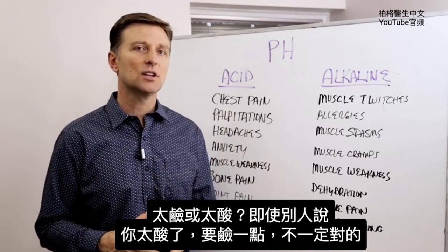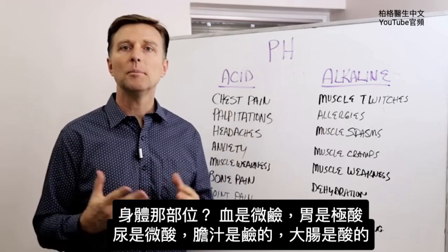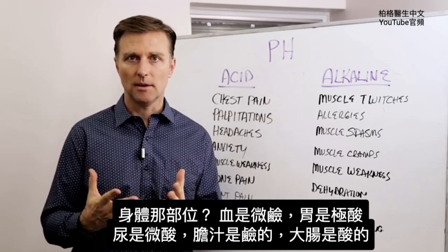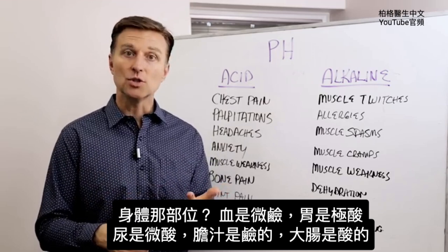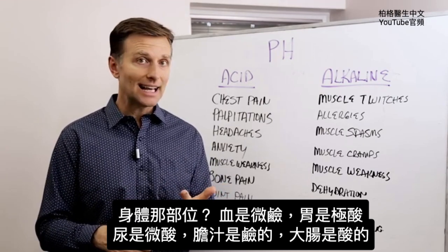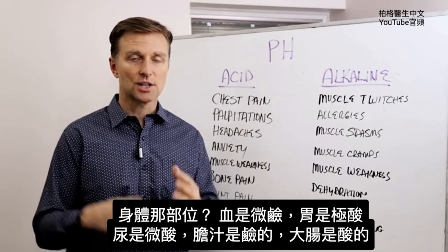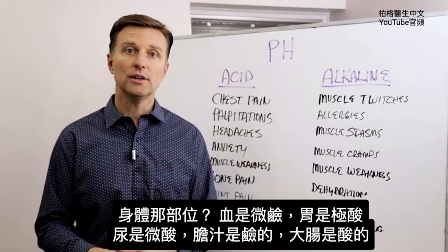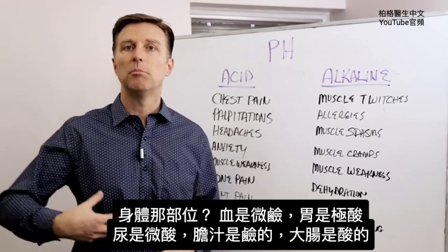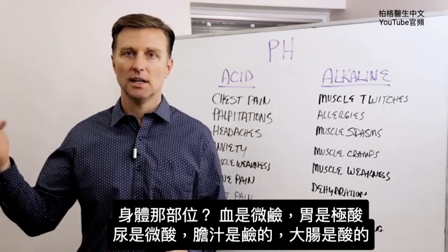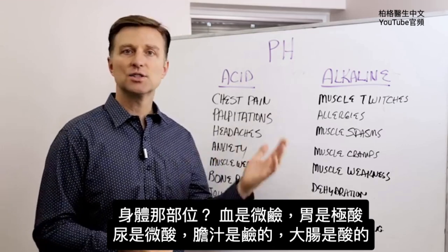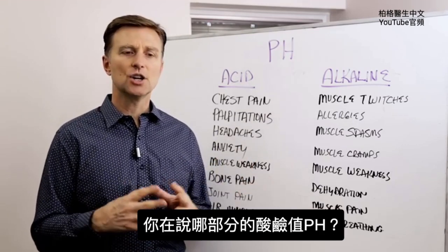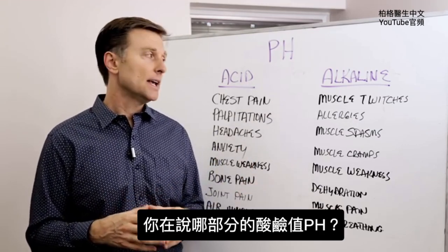What body fluid are you talking about? Are you talking about the blood, which normally should be slightly alkaline, or the stomach, which is extremely acid, or the urine that should be slightly acid, or the bile that should be alkaline, or the large bowel that should be acid? So you always want to determine what pH you're talking about.